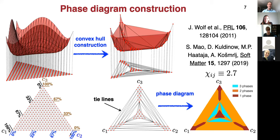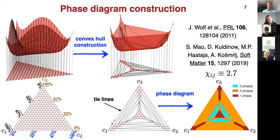The idea is: you start with your initial phase space, discretize it, and calculate the free energy at these discrete points. Then you run a convex hull algorithm which convexifies the free energy. When you project it back to the phase space, some triangles remain small but some got stretched. These stretched triangles tell you the regions that phase separate — stretched in one direction corresponds to two phases, stretched in multiple directions corresponds to three phases, and the corner points are the compositions of different phases. We can again use the lever rule to figure out the volume of each phase.